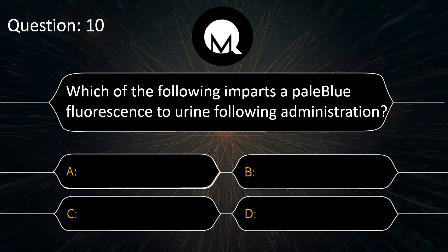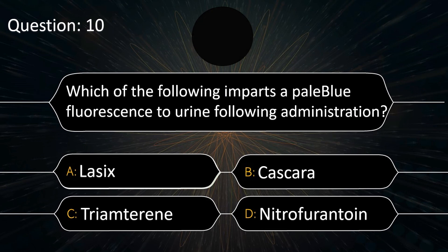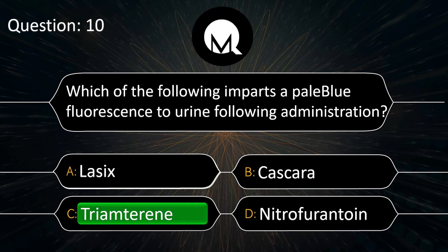Which of the following imparts a pale blue fluorescence to urine following administration? Lasix, Cascara, Triamterene, or Nitrofurantoin? The answer is Triamterene.